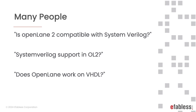Is OpenLane 2 compatible with SystemVerilog? Does OpenLane work on VHDL? OpenLane 2 includes an experimental SystemVerilog parser as part of the default flow — you'll need to set the variable use_synlig to 1. However, it is less battle-tested than the Yosys frontend, so please use it at your own risk. On Linux only, OpenLane does support VHDL, but you will need to use a slightly different flow named VHDLClassic (no space), which you can specify via the --flow command line argument.